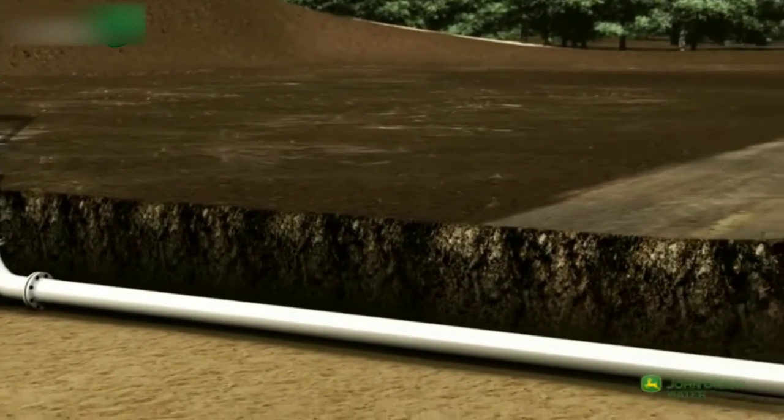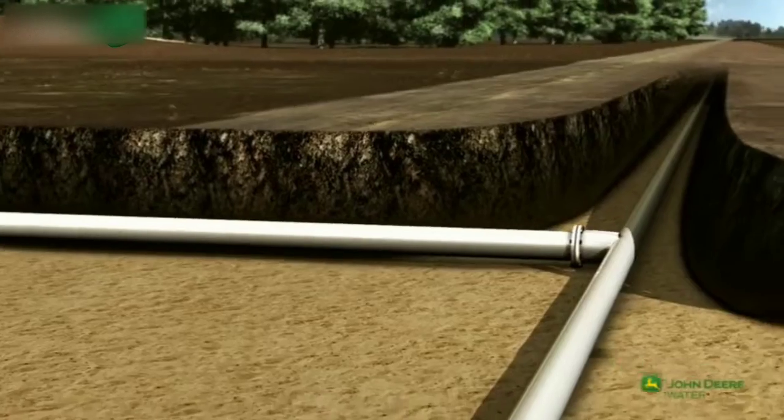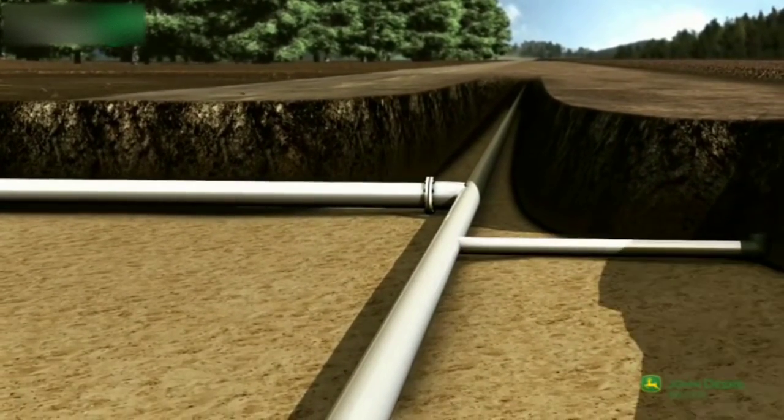Once the control head is installed, it can be connected to the main line, which in turn delivers water to the different field sections.